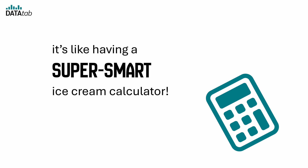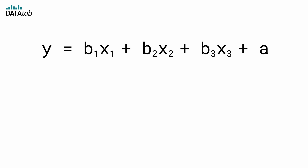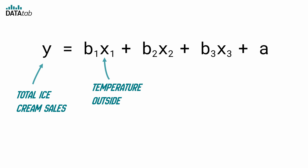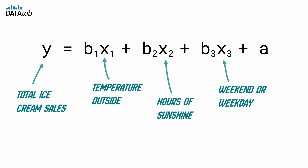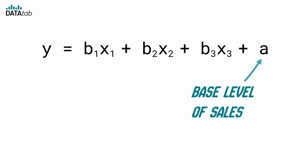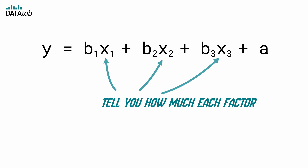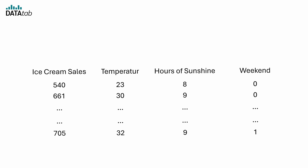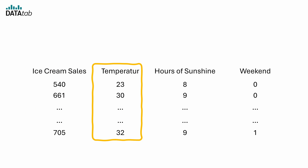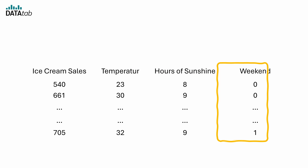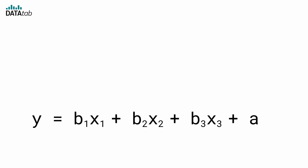In multiple regression, the equation might look like this. Y is your total ice cream sales — what you're trying to predict. X1 is the temperature outside; we know that on hotter days people crave more ice cream. X2 is hours of sunshine. X3 is whether it's a weekend or a weekday. A is your base level of sales when everything else is zero. B1, B2 and B3 are the regression coefficients telling you how much each factor influences your total sales. Just as in simple linear regression, we also need data — ice cream sales, temperature, hours of sunshine and whether it is a weekend or not. Zero stands for weekday and one for weekend.